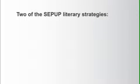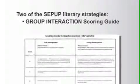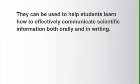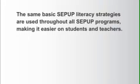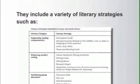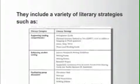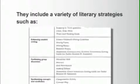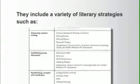Two of the CPAP Literacy Strategies — the Communicating Scientific Information Scoring Guide and the Group Interaction Scoring Guide — are also part of the CPAP Assessment System. They can be used to help students learn how to effectively communicate scientific information, both orally and in writing. The same basic CPAP Literacy Strategies are used throughout all CPAP programs, making it easier on students and teachers alike. You'll find a complete guide to our literacy strategies, along with tips for implementing them, in your teacher's guide, where they are described in more detail.